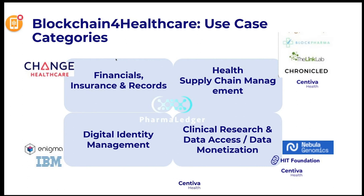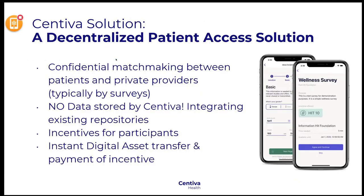One example I present is from Centiva Health — how we use blockchain technology to foster access to patients. Our solution is a decentralized patient access solution where we are the matchmaker, like Airbnb: the people who need data and the people who have data can go on the platform and find each other. Researchers, pharma companies, insurance, and others post requests for specific data, and we — the owners of the data — can accept or not. There's no data storage on our platform, and with blockchain backing we have instant digital access transfer and payment for incentive.